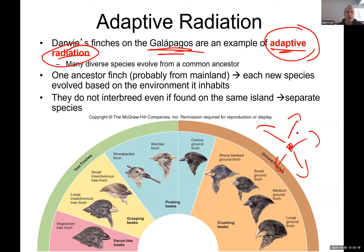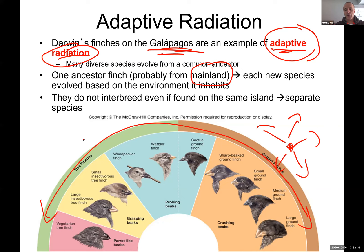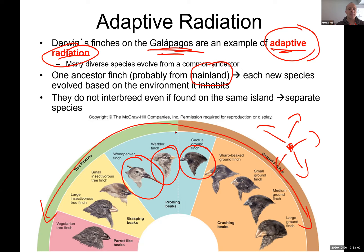There are 13 species of finches in Galápagos today, all resembling the mainland finch but not exactly the same. What's interesting: all these finches can interbreed and have babies, but all the babies are sterile — they cannot lay eggs to make new babies. So the woodpecker finch mates only with woodpecker finch, warbler finch with warbler finch, cactus ground finch only with cactus ground finch to produce fertile offspring. This is part of speciation — when one species separates from another, they cannot interbreed.